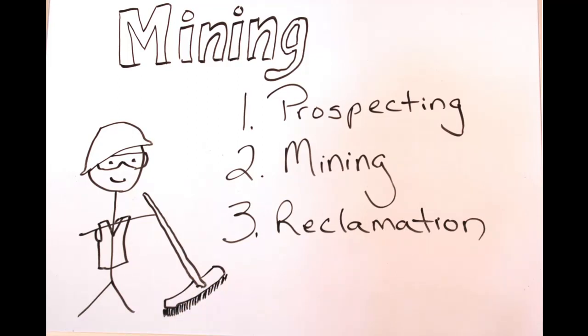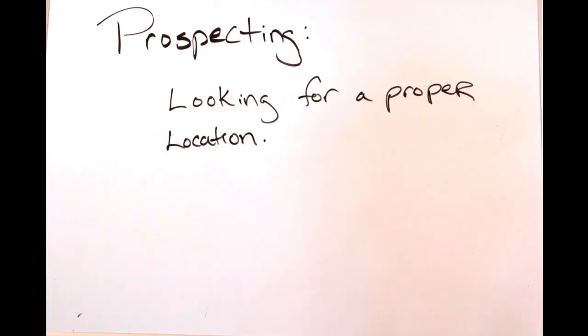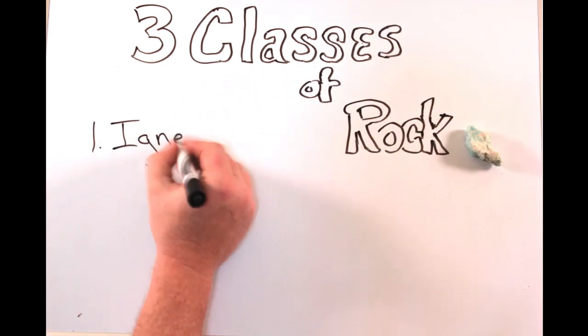In prospecting, you have to find a suitable site with good quality rock. The type of rock will vary with the geology of the area. There are three classes of rocks: igneous, metamorphic, and sedimentary.